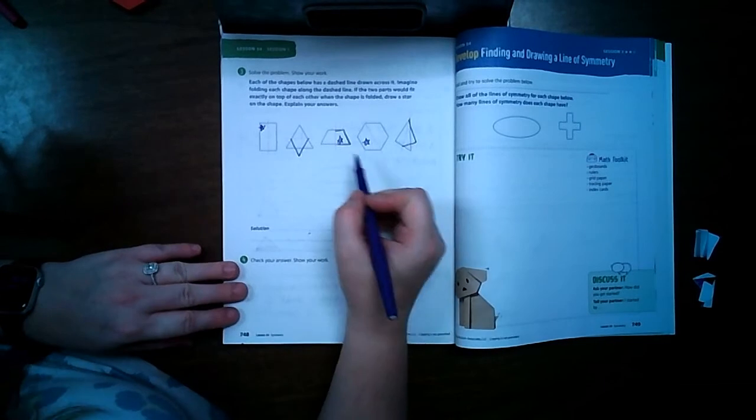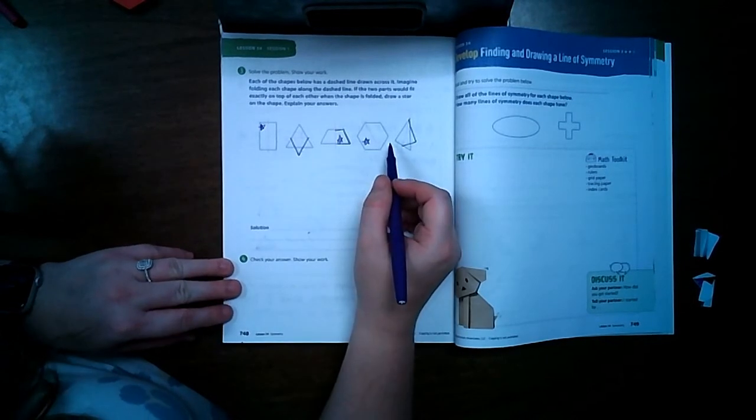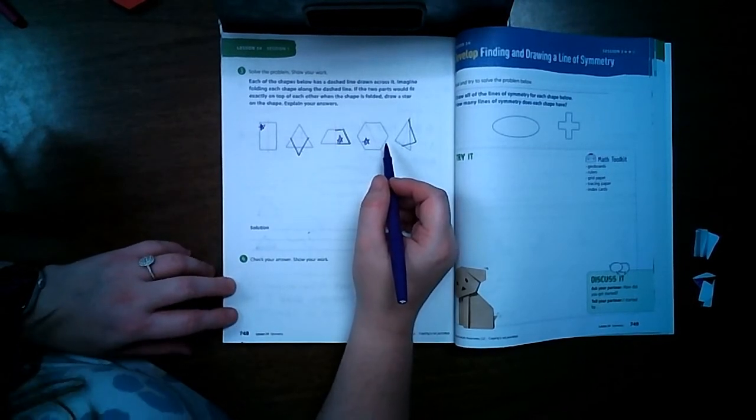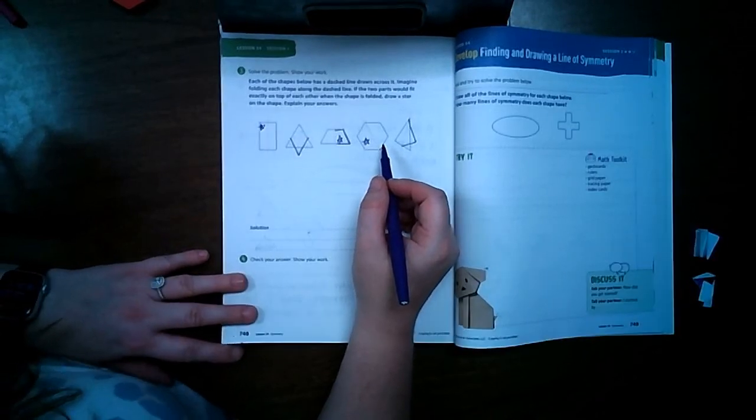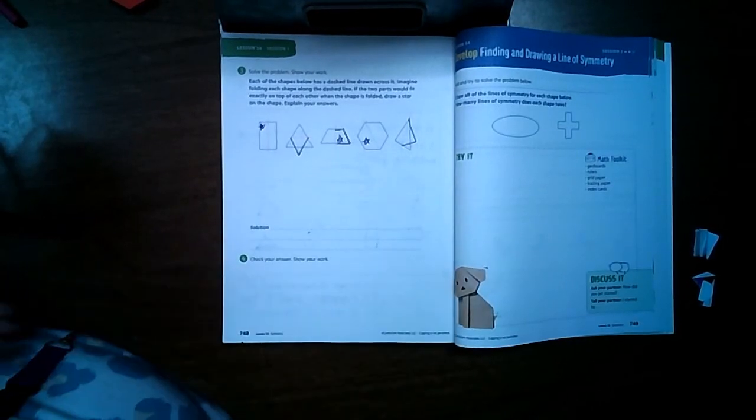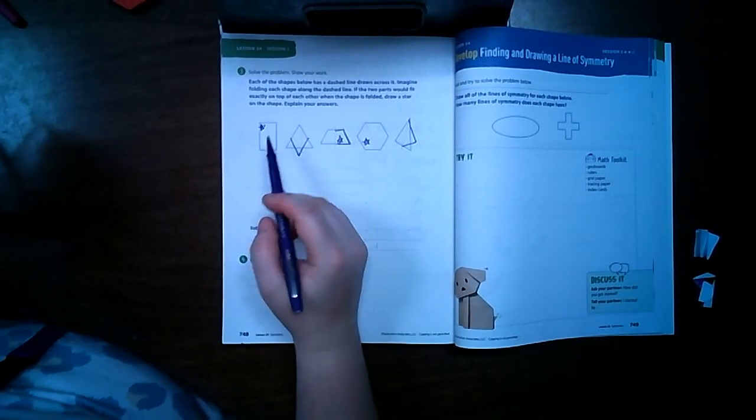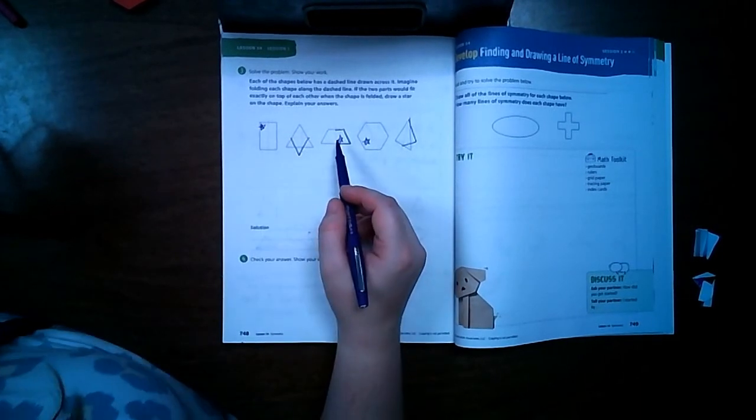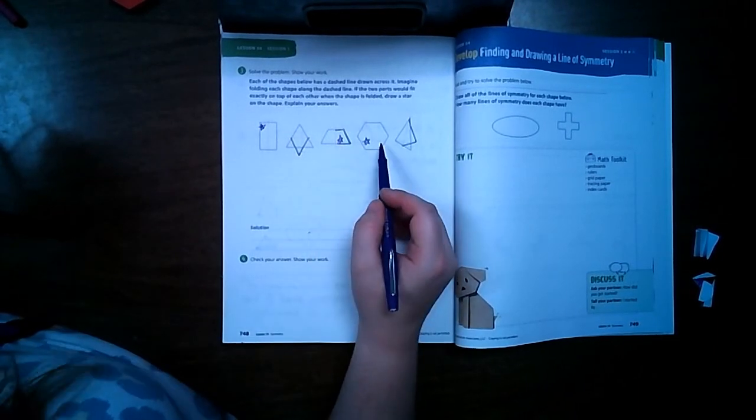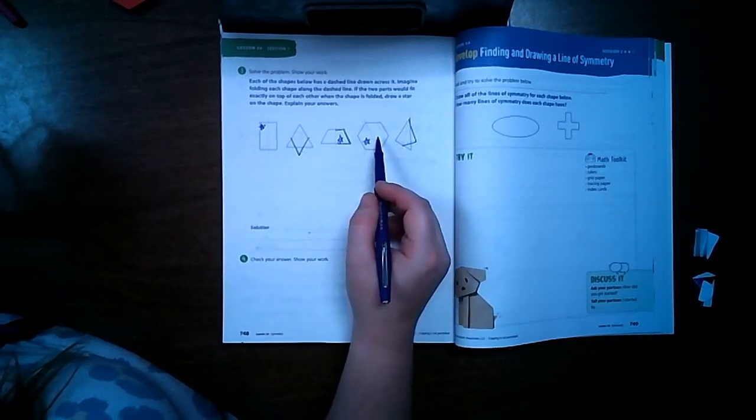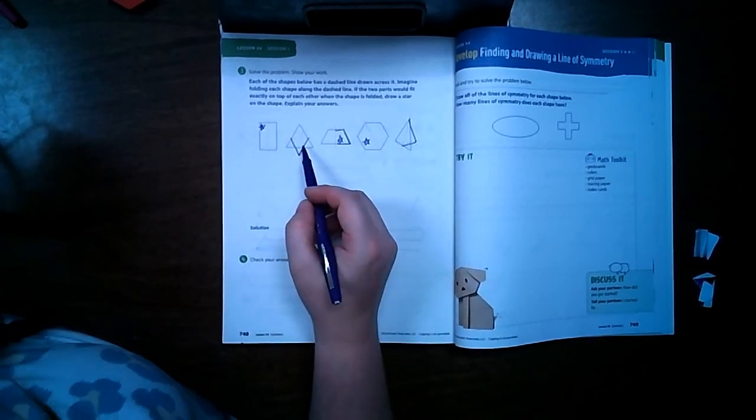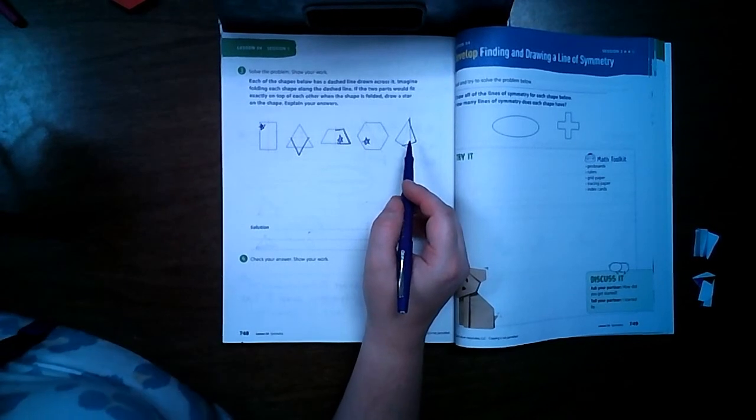Again, you can always take a piece of paper and put it over these shapes and cut them out to determine if it has a line of symmetry or not. That's the best way to tell for lines of symmetry. So we have a rectangle, a trapezoid, and a hexagon that all three have lines of symmetry. But this triangle and this other triangle do not have lines of symmetry.